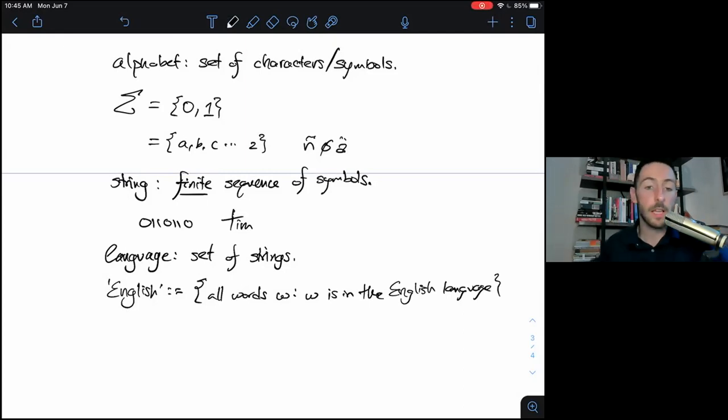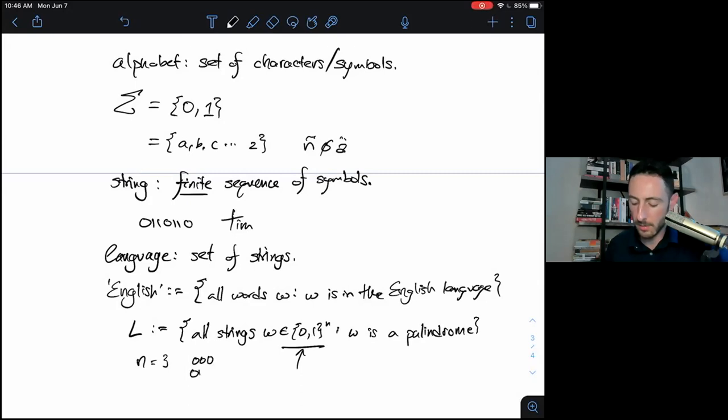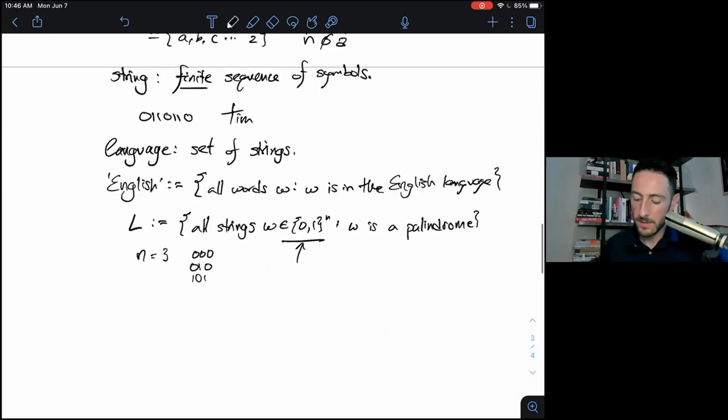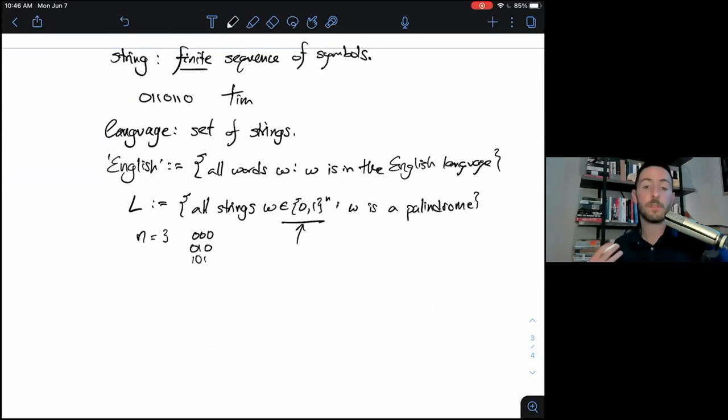But more commonly, the way we're going to use languages in this course is to talk about them as mathematical objects, groups of strings that, when interpreted in some way, have a related meaning. So we might define a language L and say this language L contains all strings W in 0, 1 to the N. This notation just means they have some length N, such that W is a palindrome. So maybe N is 3, and our palindromes are 0, 0, 0, 0, 1, 0, 1, 0, 1, etc.